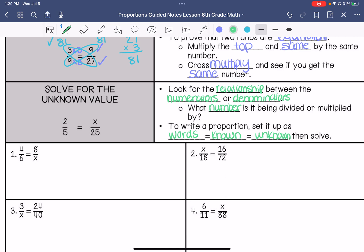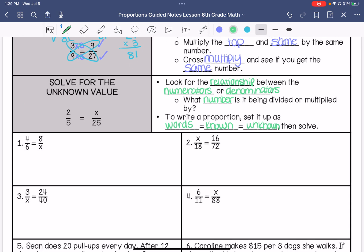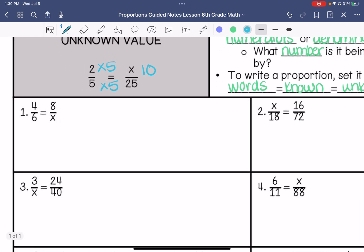So here we could do 5 times what is 25. 5 times 5 is 25, so 2 times 5 is 10. So that unknown value is 10. That's using the relationship.